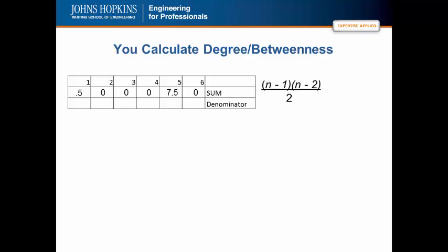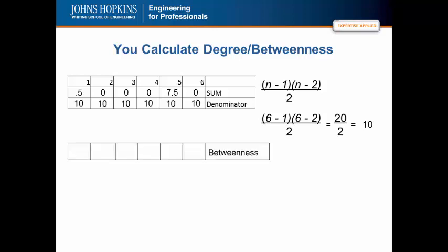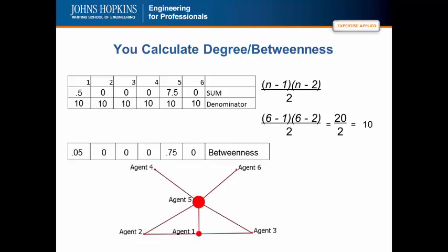The denominator is this formula as you see here. Which for this network is going to equal 10. So, the betweenness centrality scores are as follows. And this is the network where the nodes are scaled by their betweenness centrality.